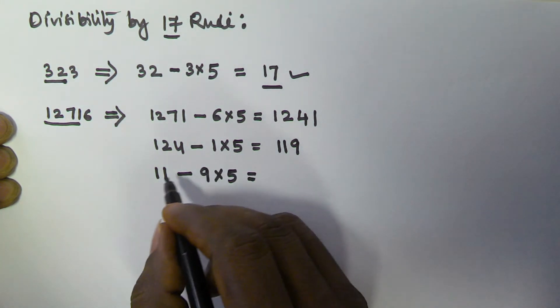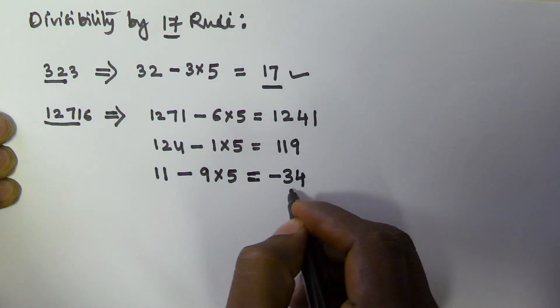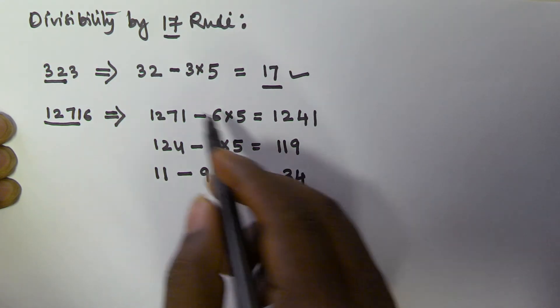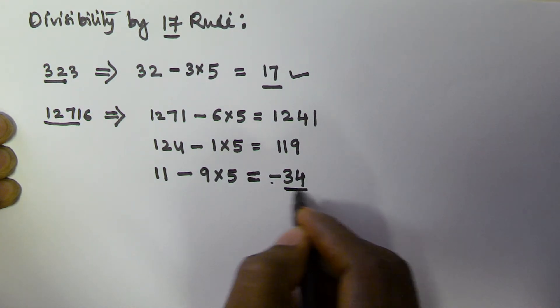So if you see that 34 is divisible by 17, whatever sign you are getting, simply ignore that. 34 is divisible by 17, so that means 12716 is divisible by 17.